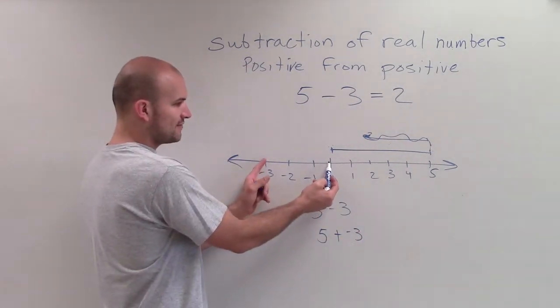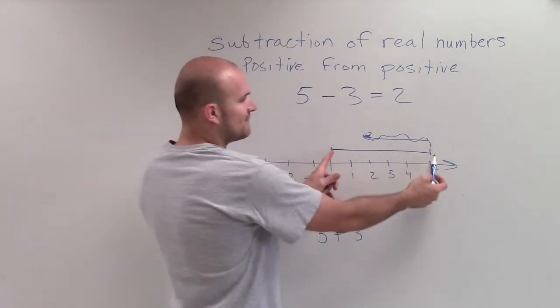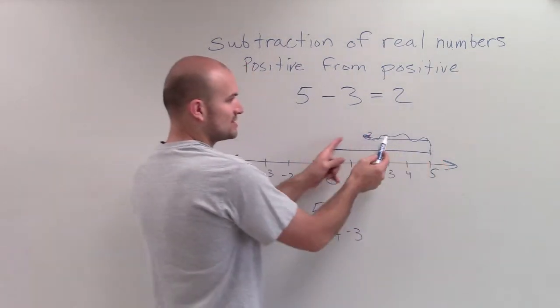We notice that the distance of negative 3 is going back in this direction. So if I take 5 and add it to a distance of going to the left 3 units, which is exactly what we're doing,